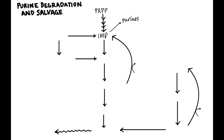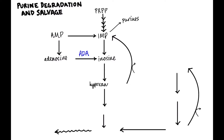AMP gets converted to IMP on the way to degrading all the way down to uric acid, which is the end step. AMP can also be converted to adenosine through an enzyme you do not need to know, and adenosine can get converted to inosine — this is a very important step. That conversion is done by an enzyme called adenosine deaminase. Inosine then gets converted to hypoxanthine through an enzyme you don't need to know.